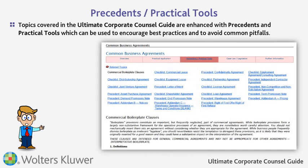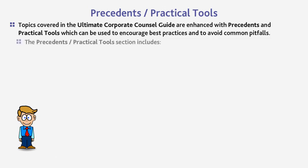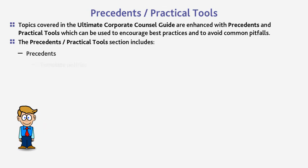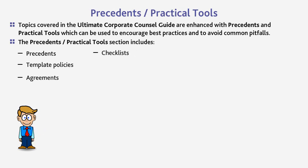Topics covered in the Ultimate Corporate Counsel Guide are enhanced with precedents and practical tools which can be used to encourage best practices and to avoid common pitfalls. The precedents and practical tools section includes precedents, template policies, agreements, checklists, charts, and sample forms and letters.